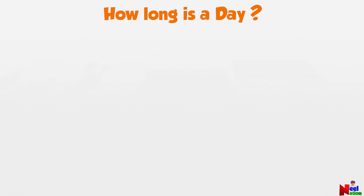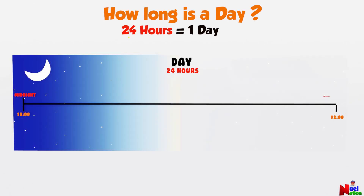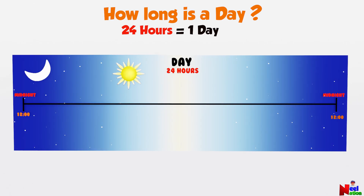Let's learn about a day. How long is a day? 24 hours make one day. A day is a 24-hour period starting from one midnight to the next. Let's divide a day into two equal halves of 12 hours each.